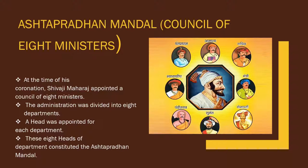Each of the eight ministers was made head of a department, with a different committee under each. Because there were eight ministers, the council was named Ashtapradhan Mandal. Maharaj alone had the power to appoint or remove a minister. The ministers were answerable to Maharaj for the administration of their respective departments and had to report problems directly to him.